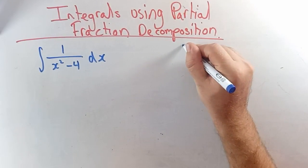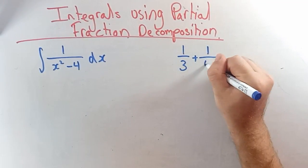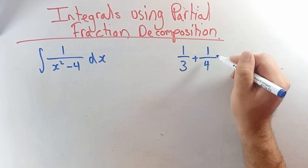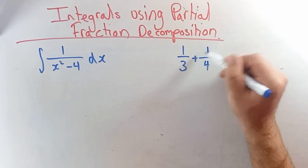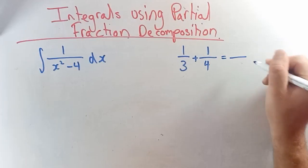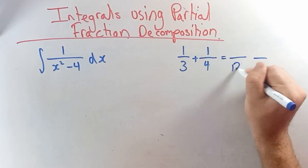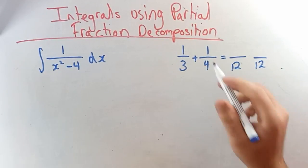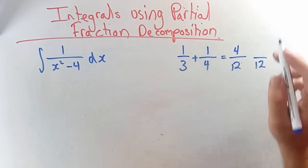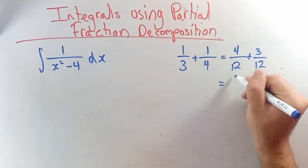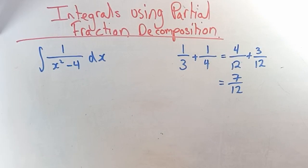When teaching kids to add fractions like one third plus one fourth, one technique is to cross multiply. The common denominator will be 12, and 4 times 1 is 4, 3 times 1 is 3, add those up and you get 7 on 12.